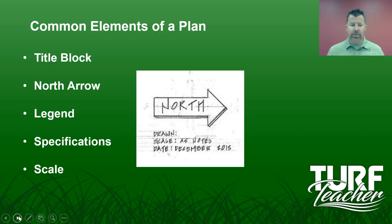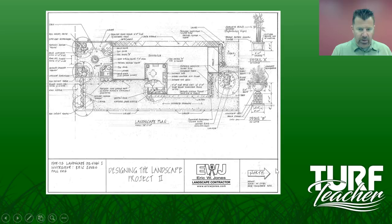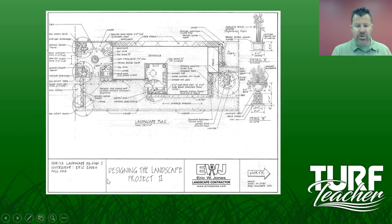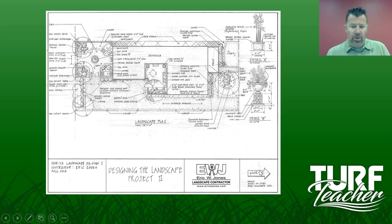Scrolling back to the plan — down here is your title block. The project for that class was designing the landscape for project two; it was HOR 112, landscape design one. I was the instructor; it was fall of 2016. The student had their information there, which I had to block out. I put my logo in there to represent how you could actually set up your title block. Then we have the north arrow, the scale, and the date it was turned in — December of 2016. That is your title block.